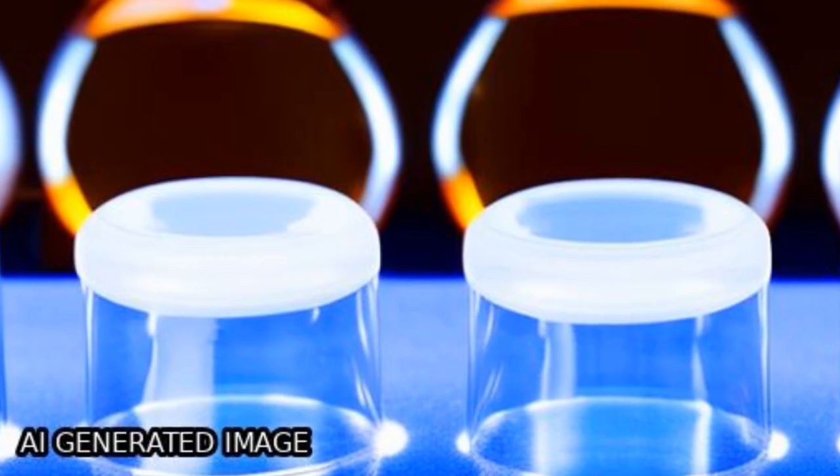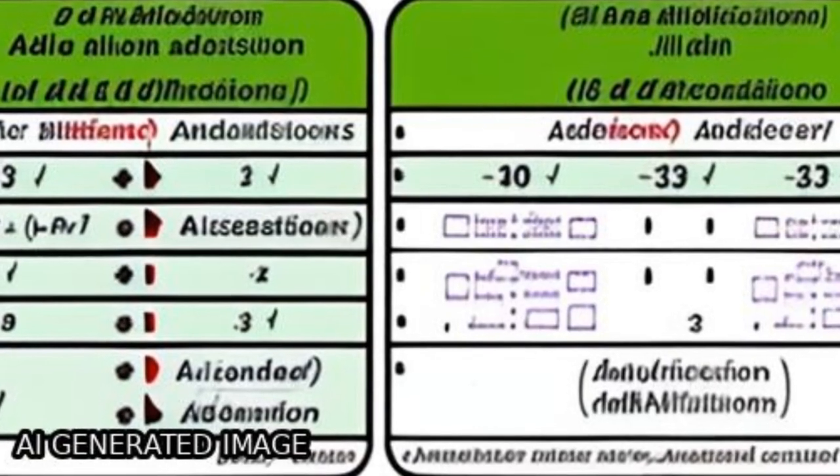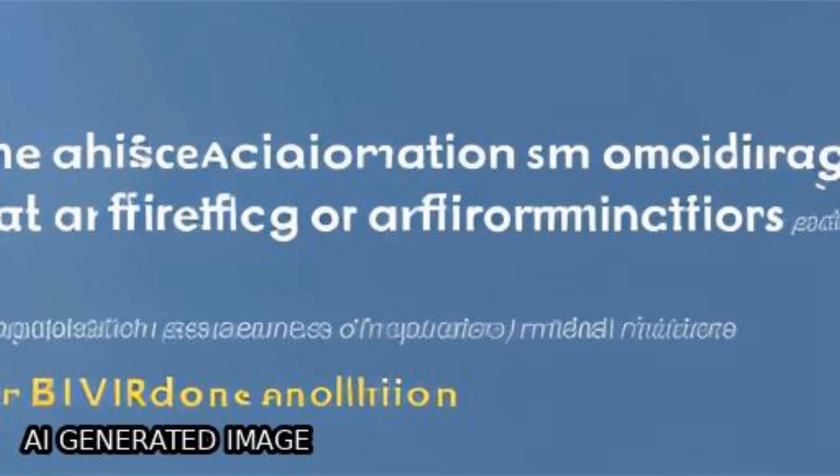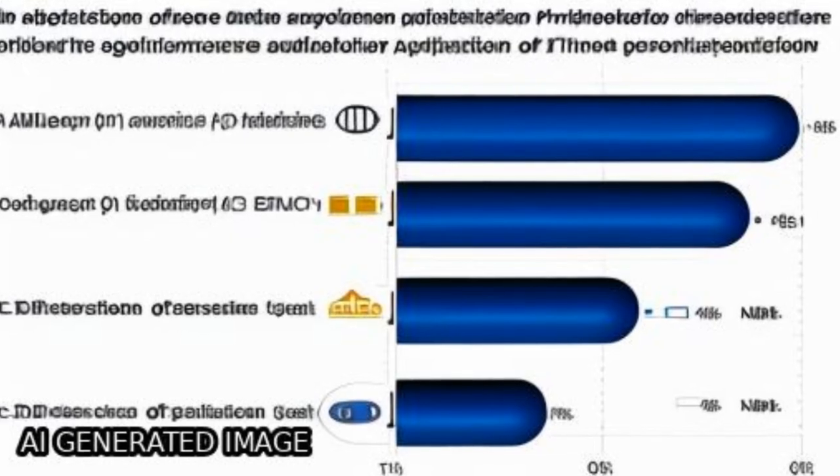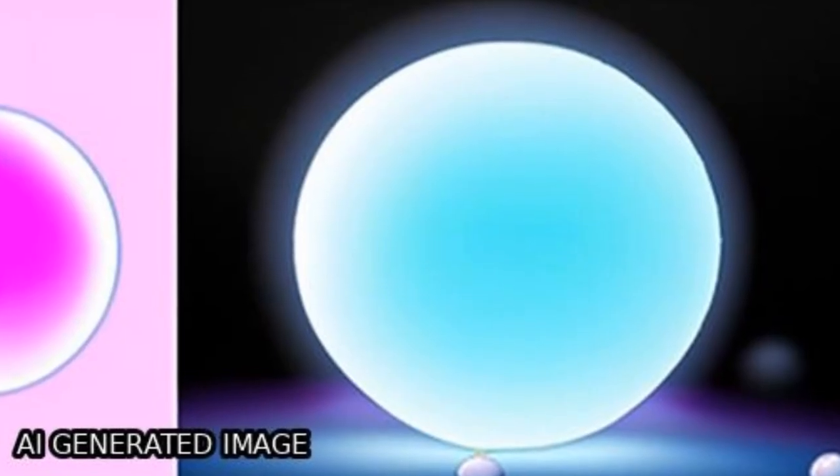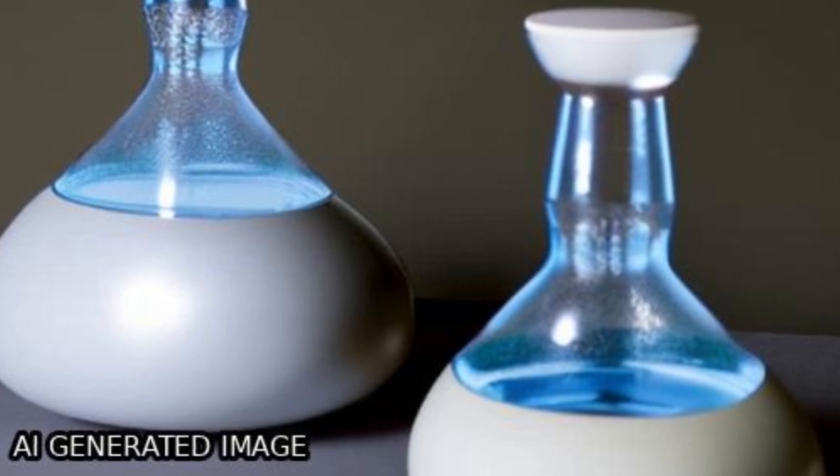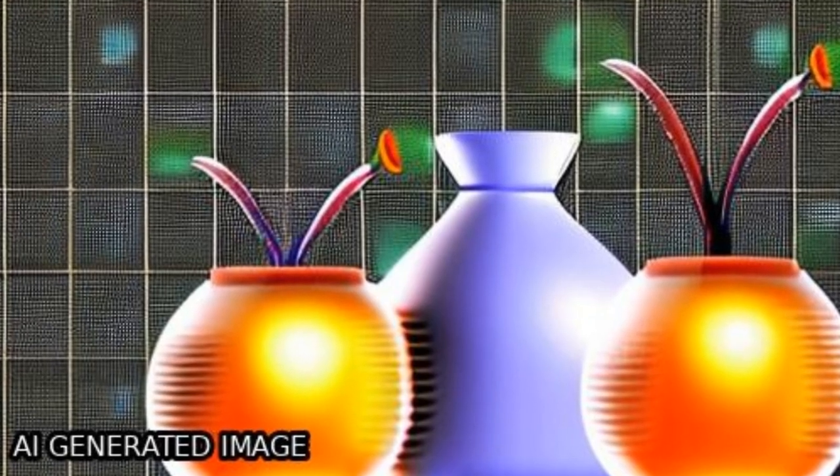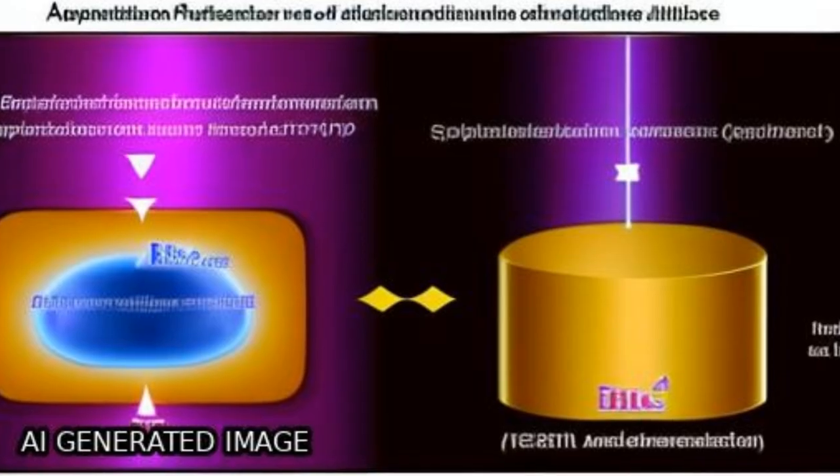The study of NO gas adsorption properties on monolayer, bilayer, and trilayer MoS₂ using first principles calculation reveals weak physical adsorption with large distance 3 angstroms, small adsorption energies less than 0.9 eV, and deformation electron density.